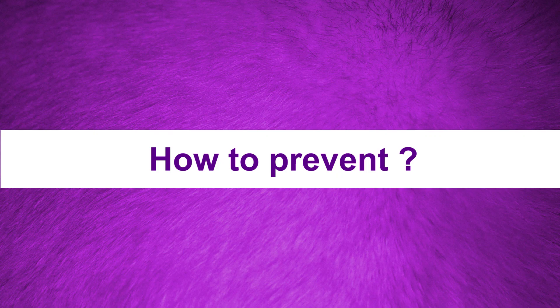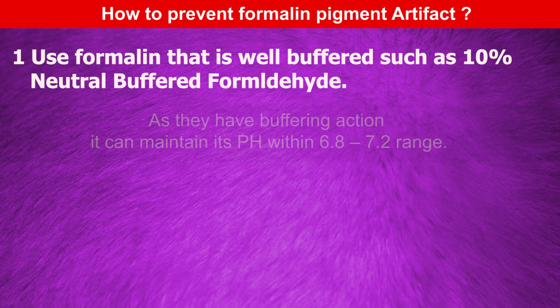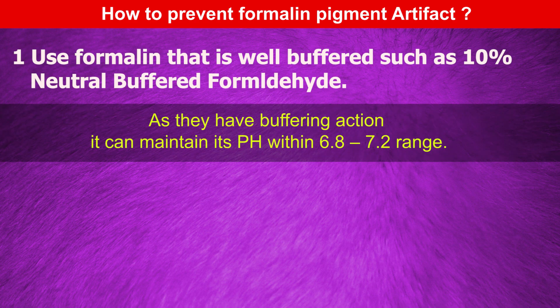How do we prevent this formalin pigment formation? To prevent the occurrence of this artifact, we can use formalin that is well buffered, such as 10% neutral buffered formaldehyde. As it has buffering action, it can maintain its pH within the 6.8 to 7.2 range.